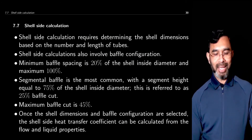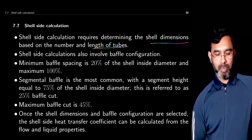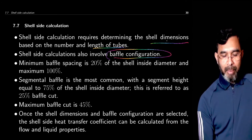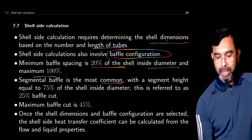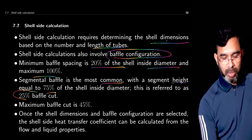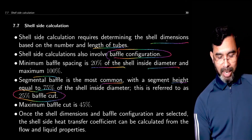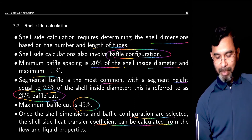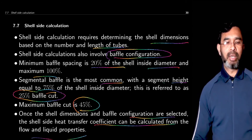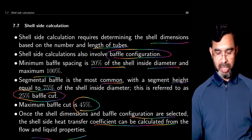You also need to calculate the heat transfer area for the shell side. For that, you determine the shell dimensions based on the number and length of tubes. Shell side calculations also involve the baffle configuration. Minimum baffle spacing is 20% of the shell inside diameter and maximum is 100%. Segmental baffles are most common, with a segment height of 75%, referred to as 25% baffle cut — meaning 25% of the shell diameter remains open. Maximum baffle cut is 45%.